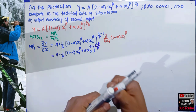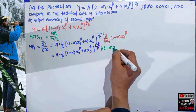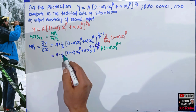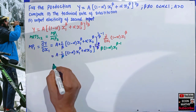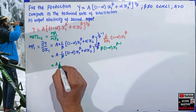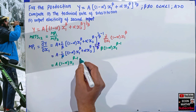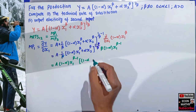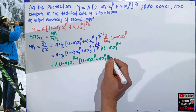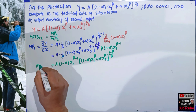By the power function rule, beta becomes the coefficient of the inner term, giving us (1 - alpha)*x1^(beta - 1). The beta values cancel, and we are left with MP1 = a*(1 - alpha)*x1^(beta - 1) * [(1 - alpha)x1^beta + alpha*x2^beta]^((1 - beta)/beta). This is our marginal product of input 1.